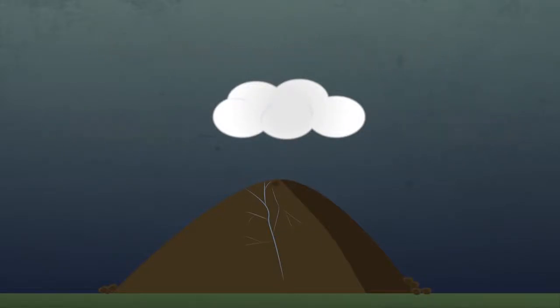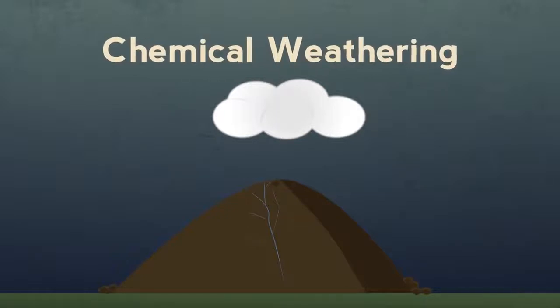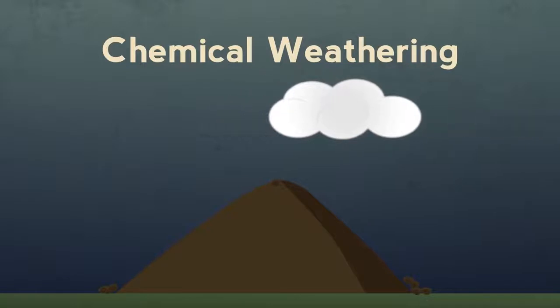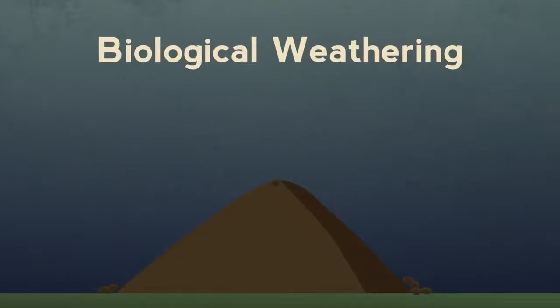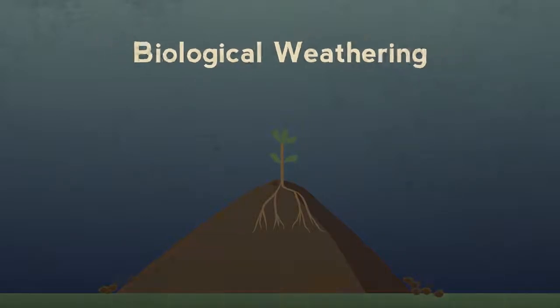Bits of rock knock into each other, breaking them. In chemical weathering, the rain, which is slightly acidic, dissolves some minerals in the rock. Biological weathering happens as lichens and then the roots of plants grow on the rocks, forcing their grains apart.